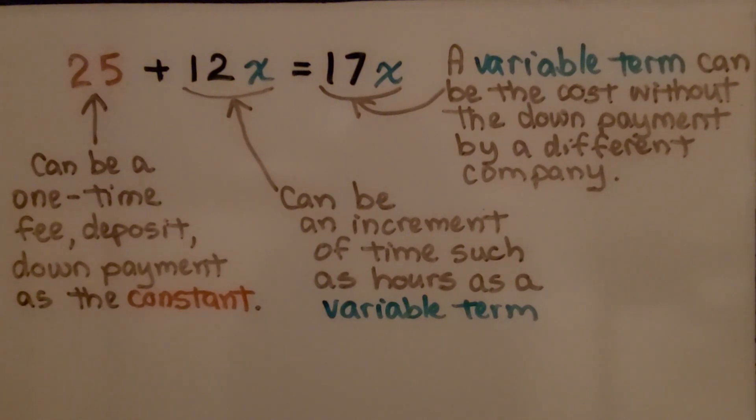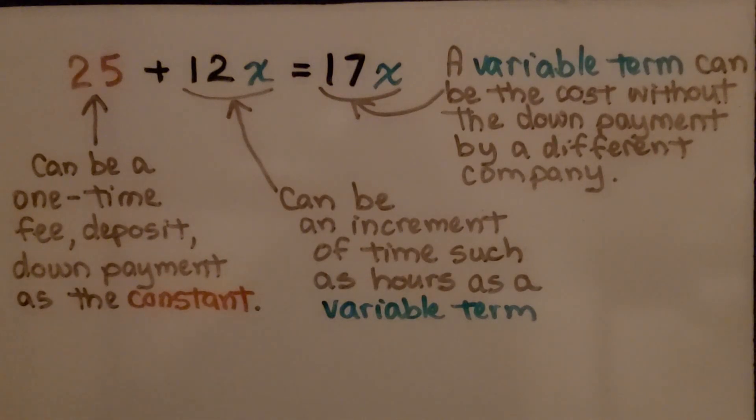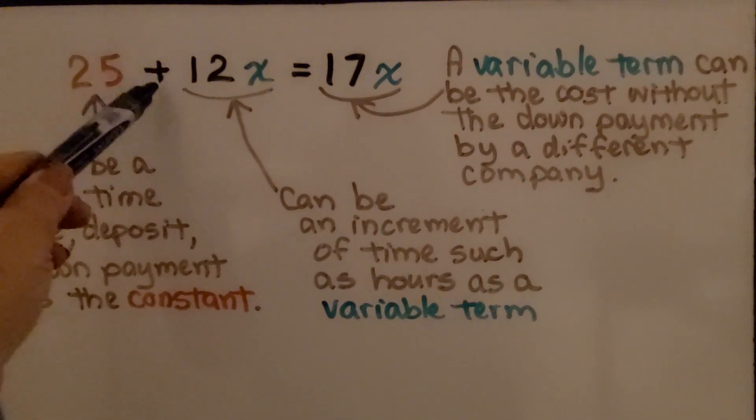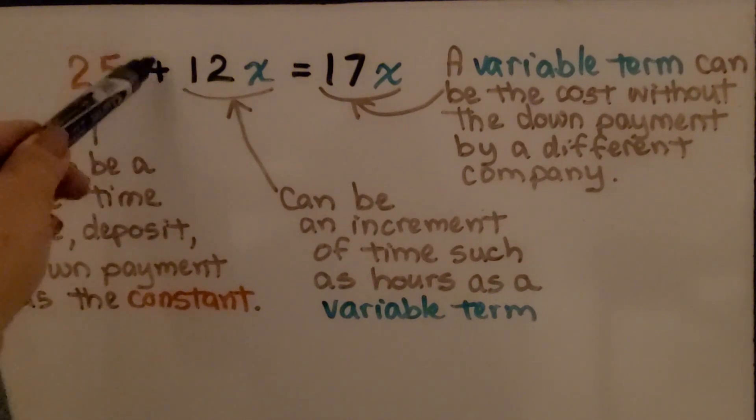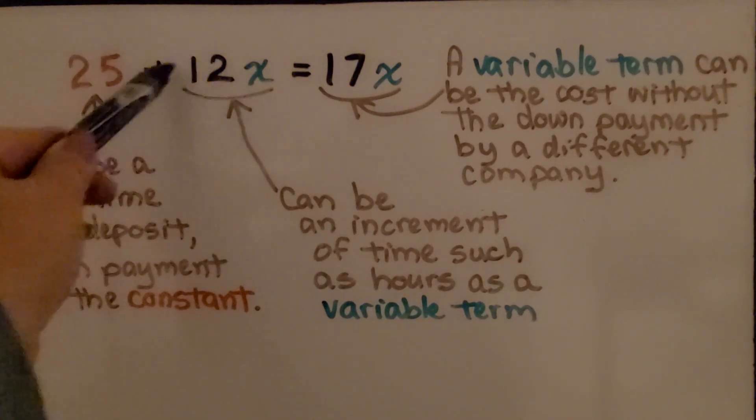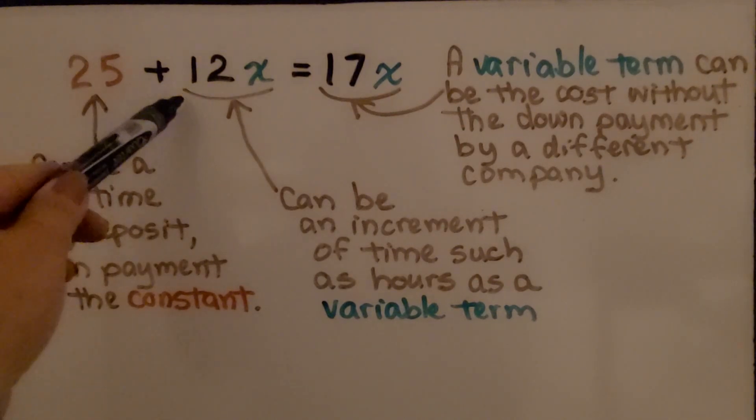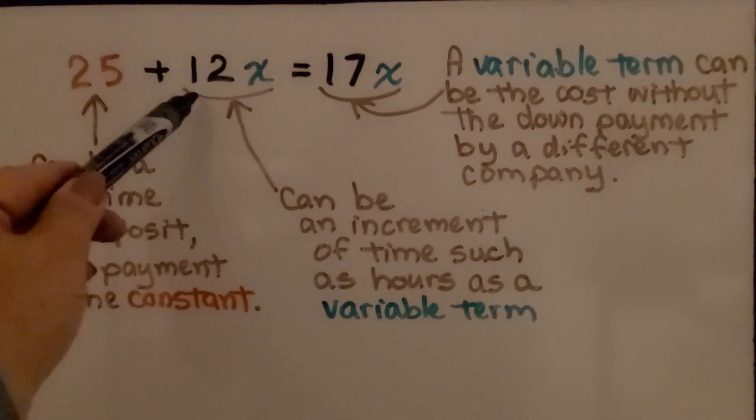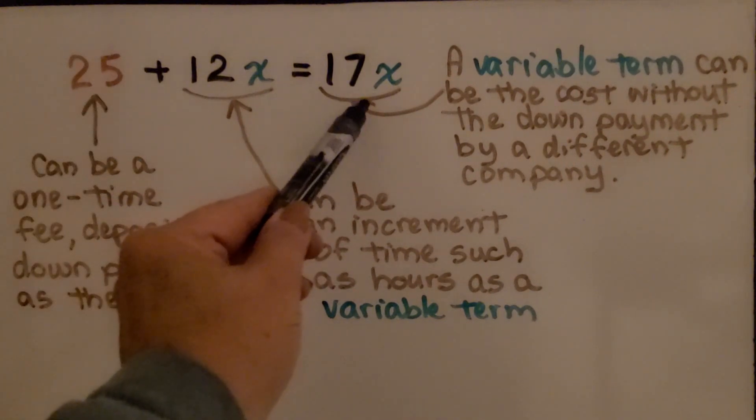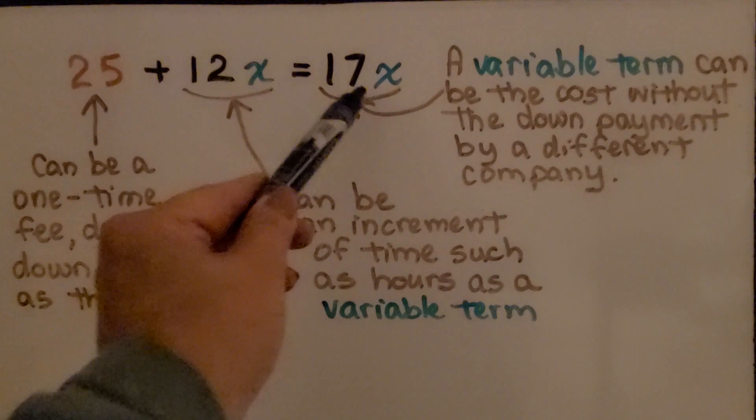Here we have the equation 25 plus 12x is equal to 17x. This 25 can be a one-time fee, deposit, or down payment as the constant. This plus 12x, remember the sign to the left goes with that term, can be an increment of time such as hours as a variable term. Here we have another variable term. It can be the cost without the down payment by a different company.